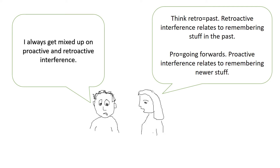It can be easy to get mixed up between proactive and retroactive interference. So try and think of retro as meaning past — so retroactive interference relates to remembering stuff in the past. Pro can be equated to going forwards, so proactive interference relates to remembering newer stuff.